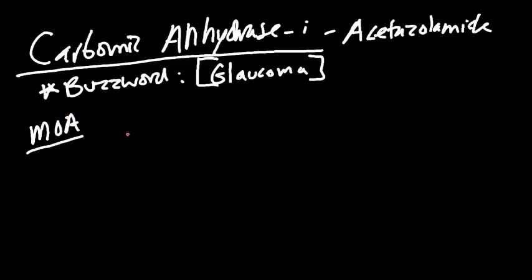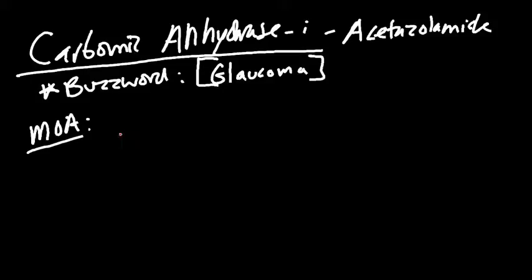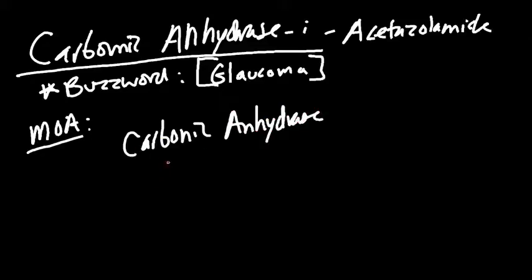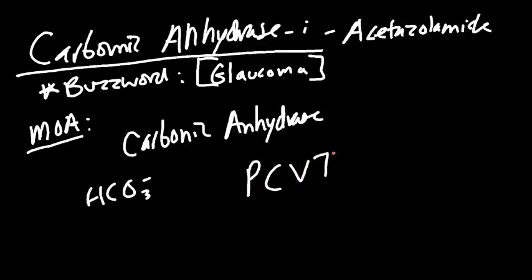Let's go into the mechanism of action for carbonic anhydrase inhibitors. We'll start with normal physiology. Carbonic anhydrase is an enzyme required for bicarbonate (HCO3) reabsorption, and this is found primarily in the proximal convoluted tubule, the PCT.